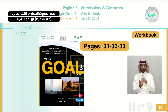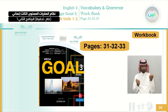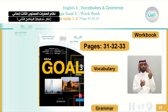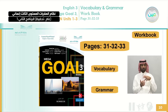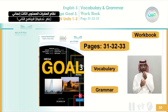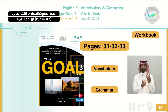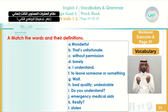Now we're moving to the workbook. We have six exercises on pages 31, 32, and 33. They are mainly about vocabulary and grammar. The first two exercises are about vocabulary — we review the vocabulary of units 1, 2, and 3. The other four exercises are about grammar.